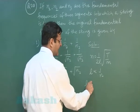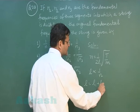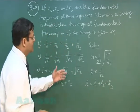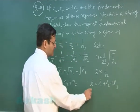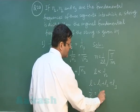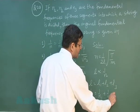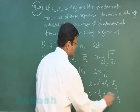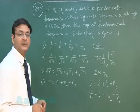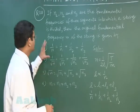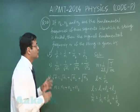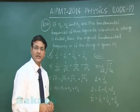Since the string is divided into segments l1 + l2 + l3 = l, the frequency relation becomes 1/n = 1/n1 + 1/n2 + 1/n3. The most appropriate answer is option number 1. That explains question number 20.